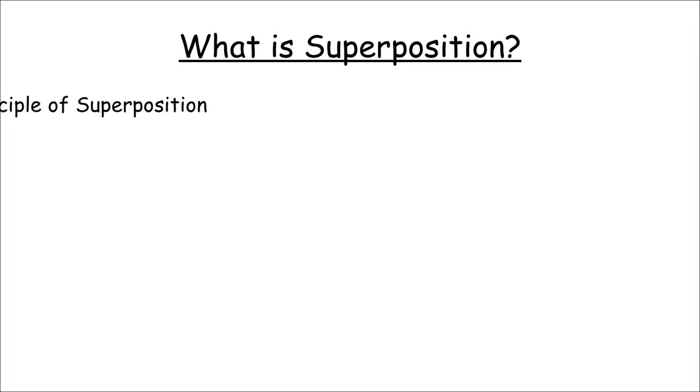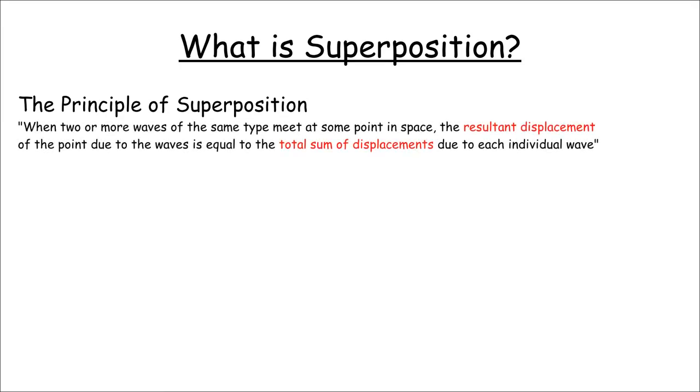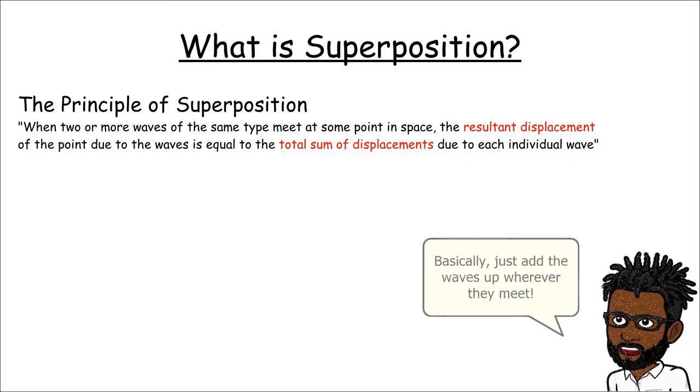This leads us to the principle of superposition which tells us that when two waves of the same type meet at some point in space, the resultant wave has a displacement that is equal to the total sum of displacements due to each individual waves. It's basically adding up the waves wherever they meet in space.